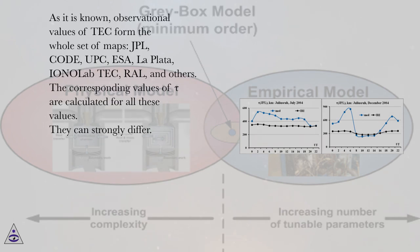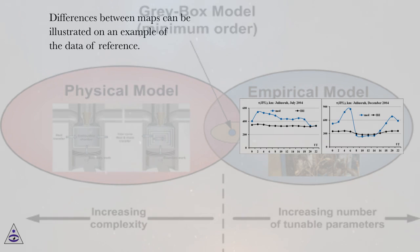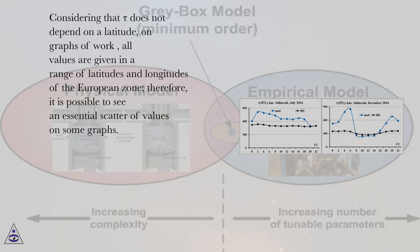As it is known, observational values of tau are calculated for all these values. They can strongly differ. Differences between maps can be illustrated on an example of the data of reference. Considering that tau does not depend on a latitude, on graphs of work, all values are given in a range of latitudes and longitudes of the European zone, therefore it is possible to see an essential scatter of values on some graphs.